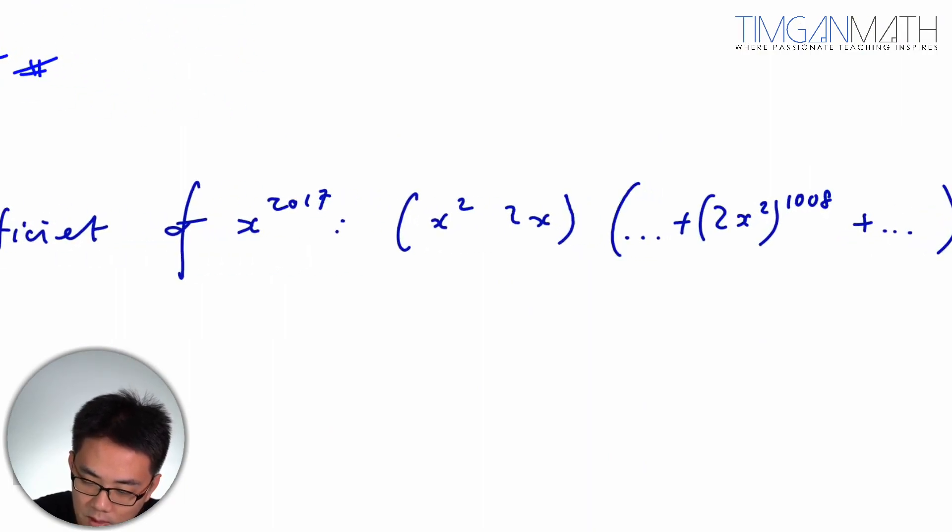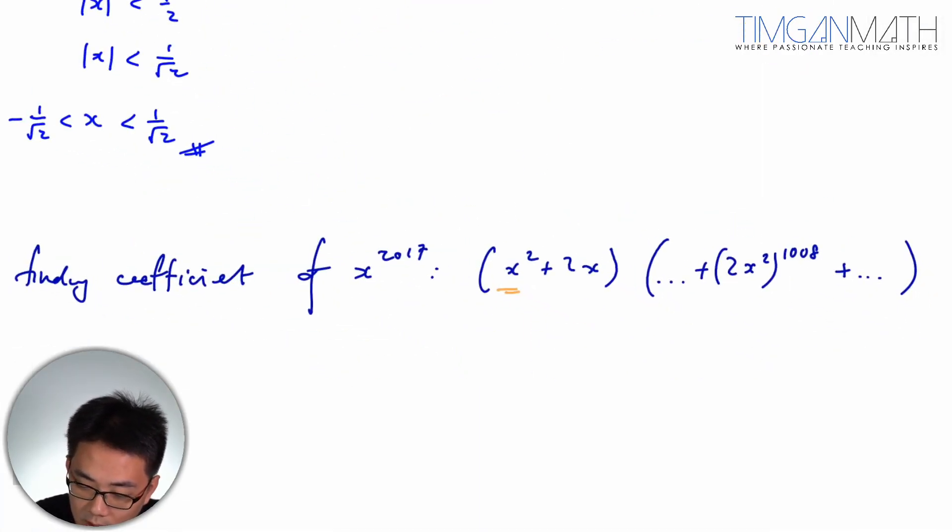So this part here, we don't need this because it will give us an even when you multiply it. What we need is this part here, so this multiply with this.